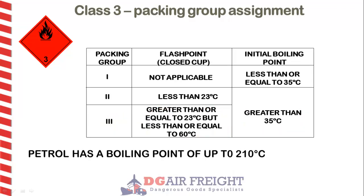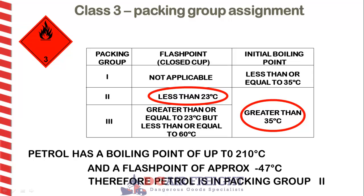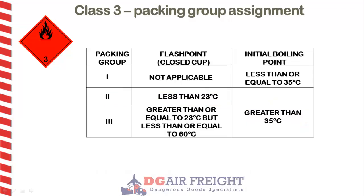Petrol however has an initial boiling point of up to 210 degrees Celsius and a flashpoint of minus 47 degrees Celsius, so it falls into packing group 2, or medium danger.